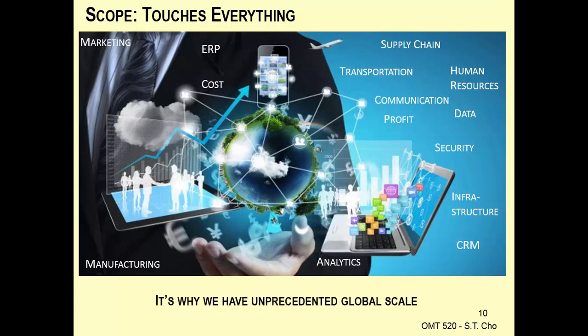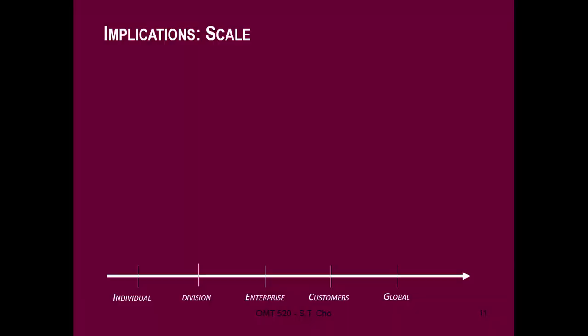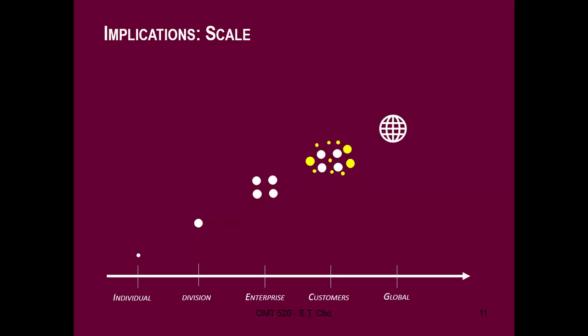We're talking about something on a global scale. When things get larger — from us, to a division of the company, to an enterprise with multiple divisions — you throw in your customers and you can touch the world. And not only can you touch the world, we can go out into the universe. That's how far we could scale up. Do we go out into the universe? Yes — they're called satellites, and we've got a lot of them up there.